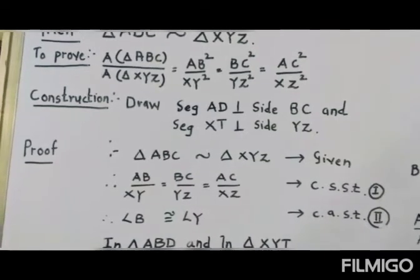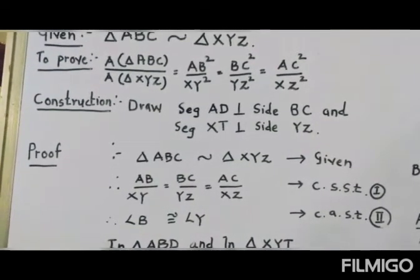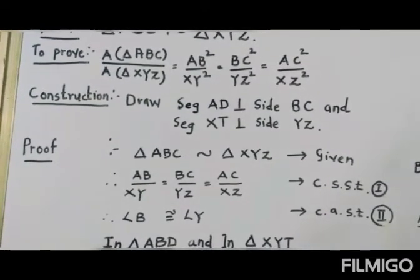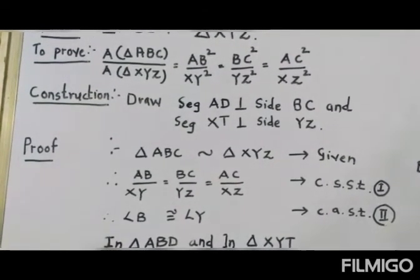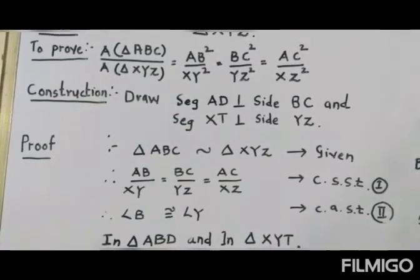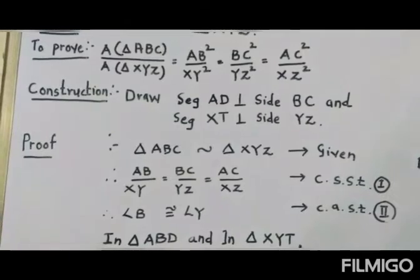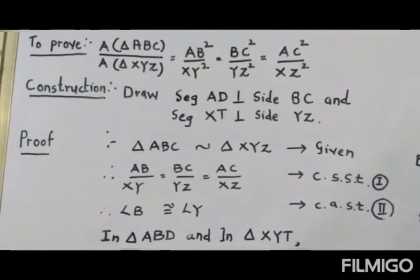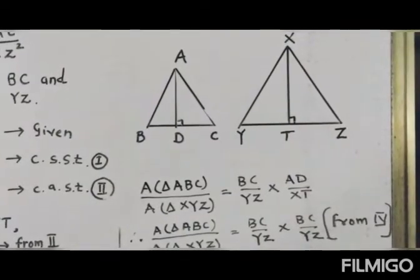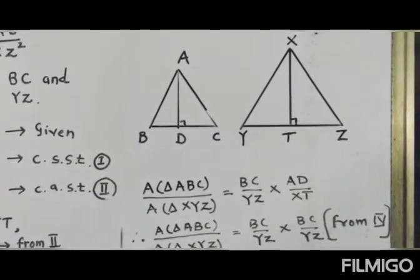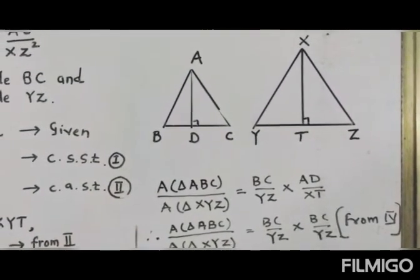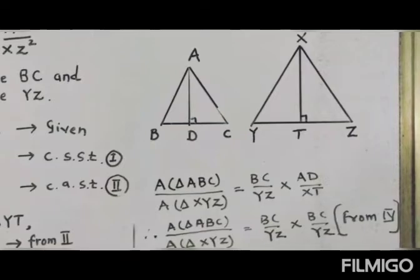Side BC is proportional to YZ, so BC² upon YZ², and AC² upon XZ². For that, let me remind you the first property: the ratio of the areas of two triangles is equal to the ratio of the product of their base and height. Here the bases are BC and YZ respectively, so we need to consider the heights.